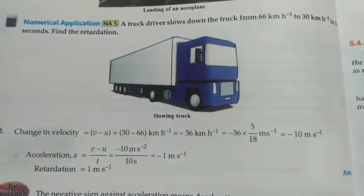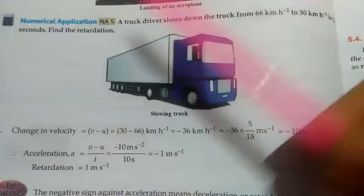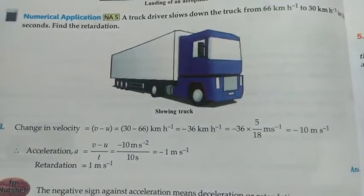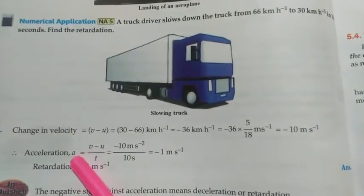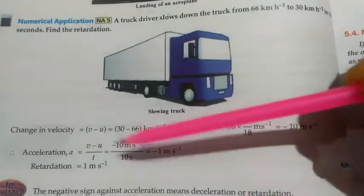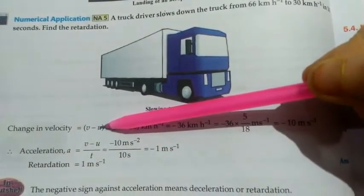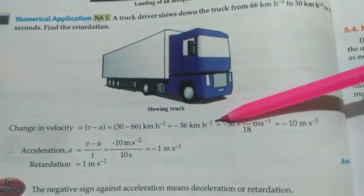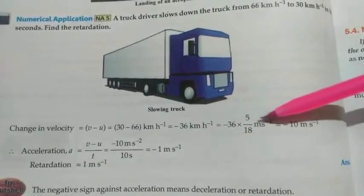We have to find retardation, which means we find acceleration using the first equation of motion: a = (v − u) / t. Putting in the values, v minus u gives us −36 km/h. Here v means final velocity and u means initial velocity.